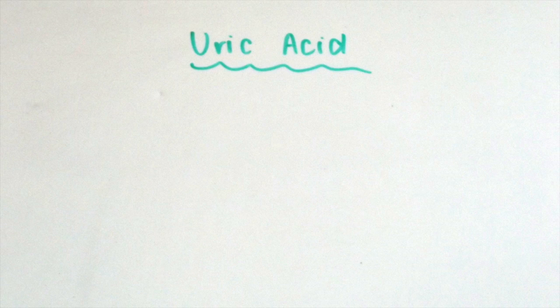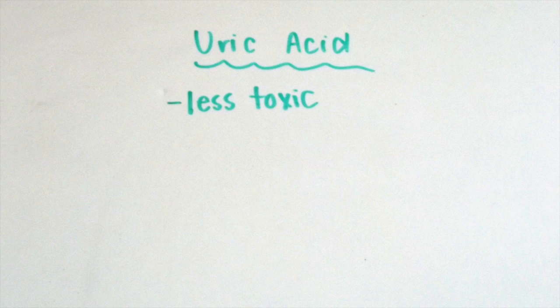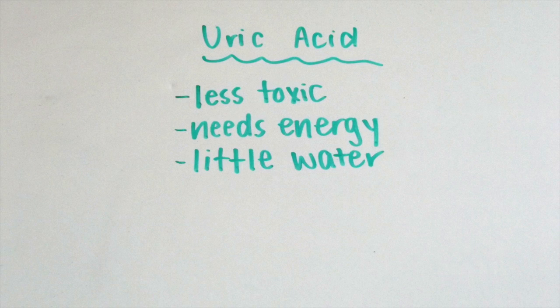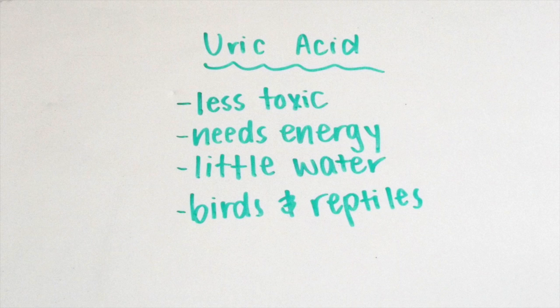The last nitrogenous waste I'll talk about today is called uric acid, and it's less toxic than urea. But of course, it takes a considerable amount of energy to produce it, even though very little water is needed to excrete it. Some animals that excrete uric acid are birds and reptiles.